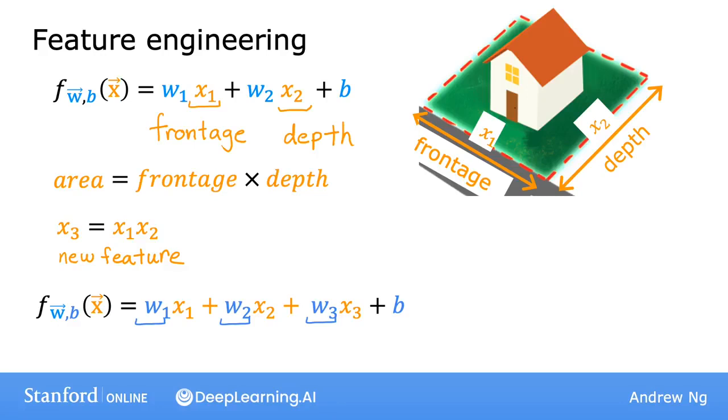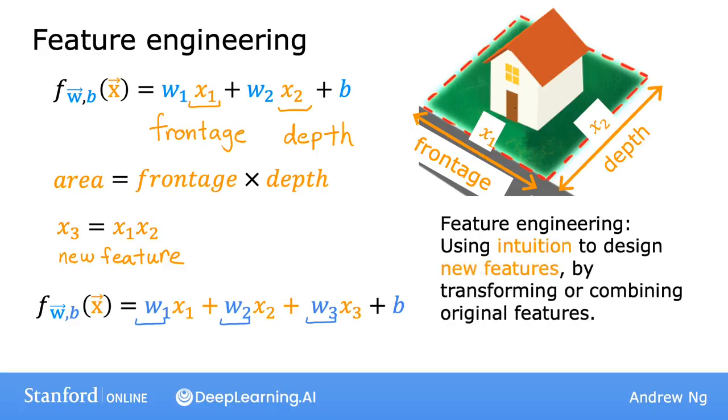What we just did, creating a new feature, is an example of what's called feature engineering, in which you might use your knowledge or intuition about the problem to design new features, usually by transforming or combining the original features of the problem in order to make it easier for the learning algorithm to make accurate predictions.